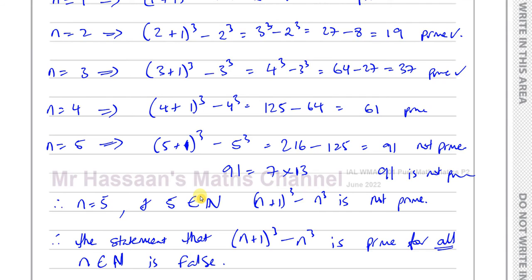You should always write this final statement — that's part of these types of proof questions. You should write these final statements and show your steps very clearly.